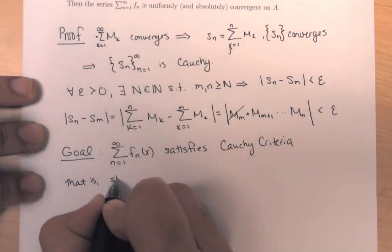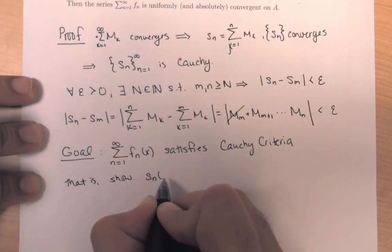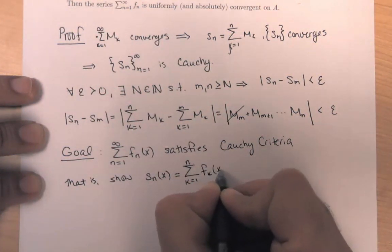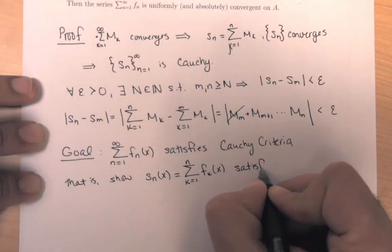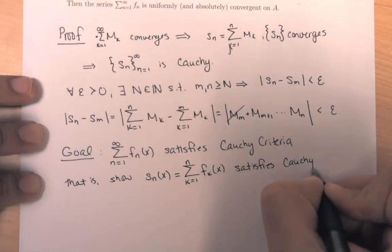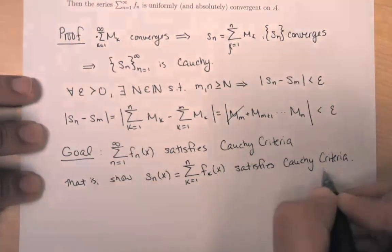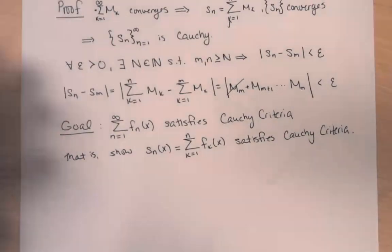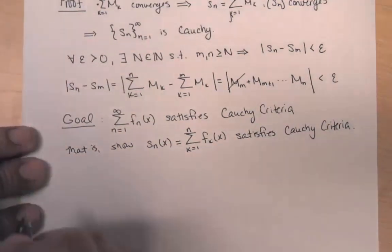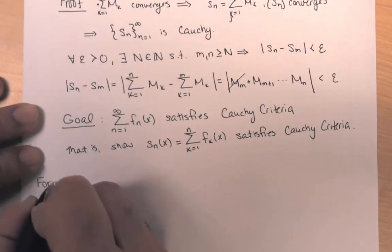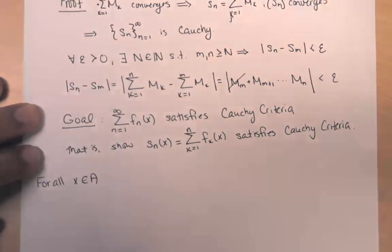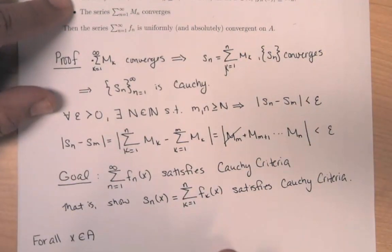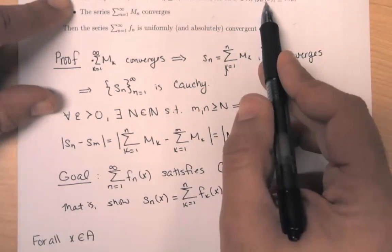That is, we want to show S_n(x) — the partial sum — satisfies the Cauchy criteria. For all x in my domain, according to the first bullet of our hypothesis, for each n there is an upper bound m_n for |f_n(x)| for every x in the domain.